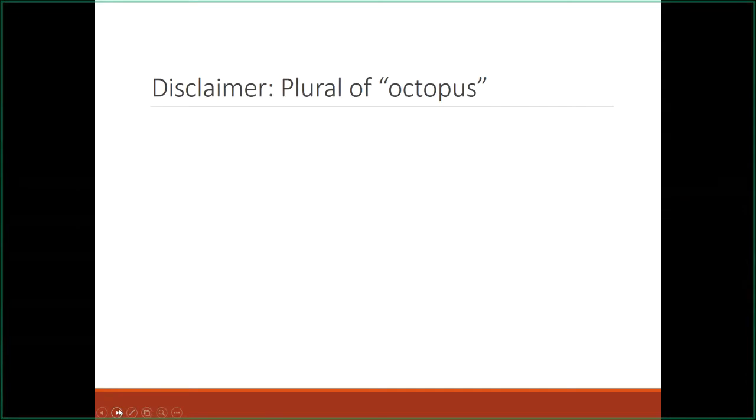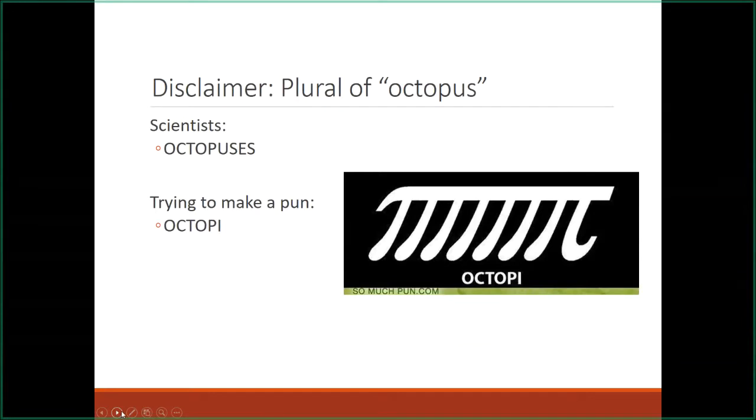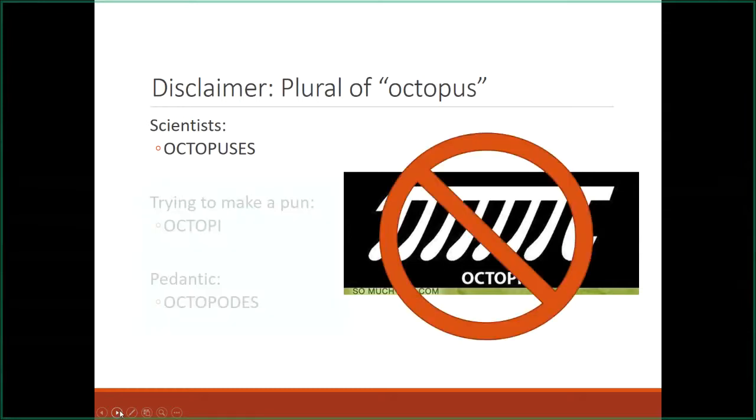So whenever I have a conversation with anybody about octopuses, this is the first thing that comes up. Exactly how do you say more than one octopus? Scientists use octopuses in scientific literature. But if you're trying to make a pun, octopi is going to be the way to go. But if you're really pedantic, octopus is actually a Greek root word, so you can actually say octopodes if you're trying to be really accurate there. But for this talk, we're just going to use octopuses.